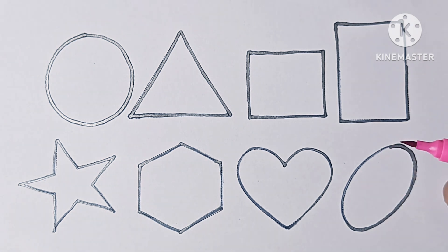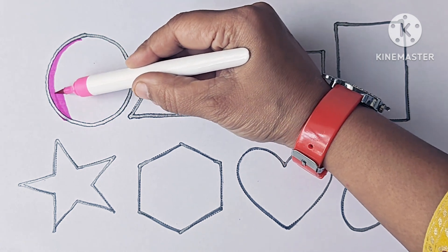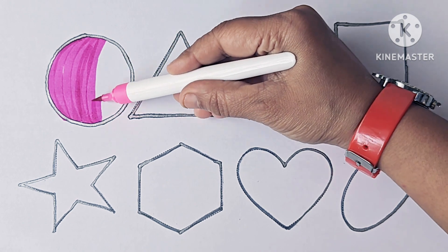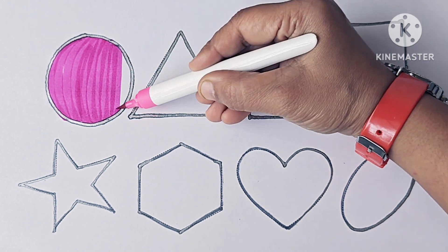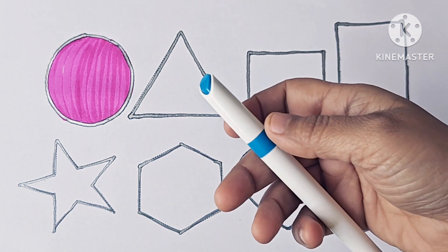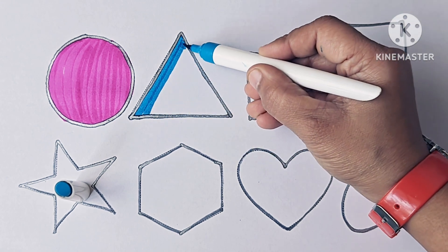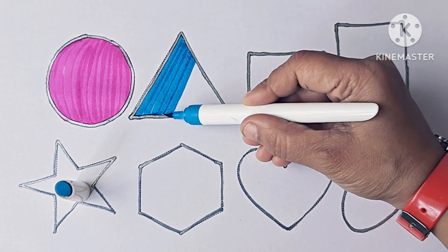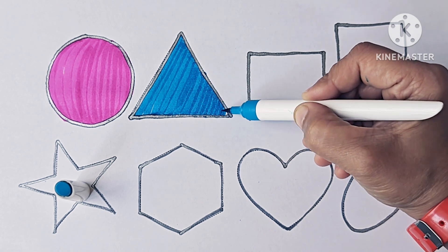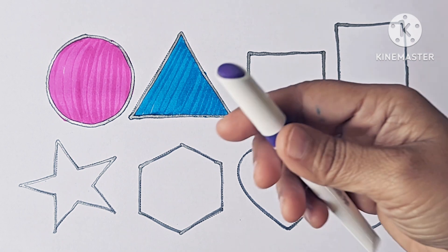Let's color it. This is pink color. Circle. Blue color. Triangle. Violet color.